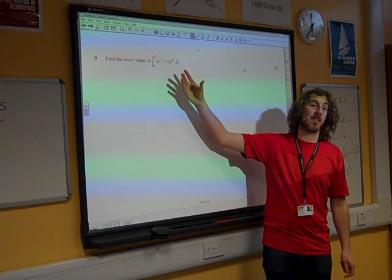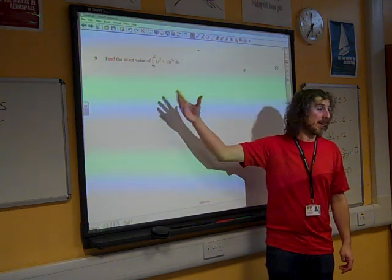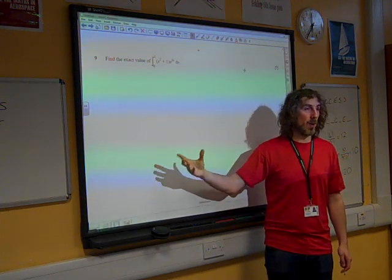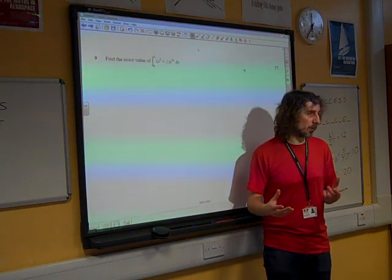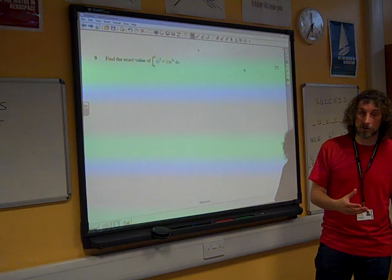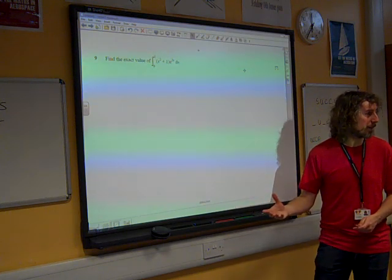The other bit, the dv by dx, we need to be able to integrate it, and we would like it not to get much worse when we integrate it. So we want something that will get nicer when we differentiate it, and something that won't get worse when we integrate it.